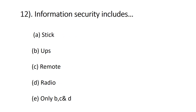Question number twelve: information security includes — A) stick, B) UPS, C) remote, D) radio, E) only B, C, and D. The right answer is D, radio, because through radio we can pass information to other guards or any other department.